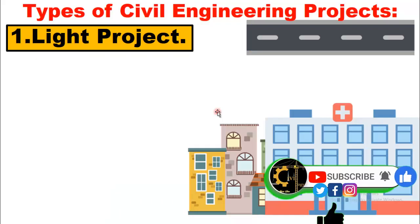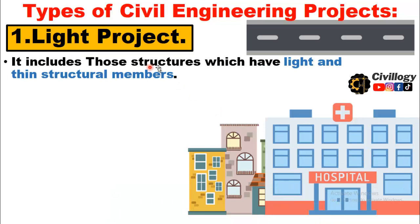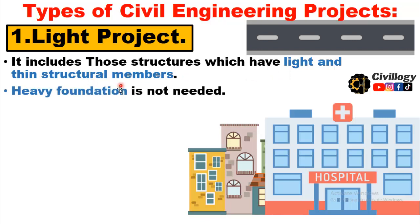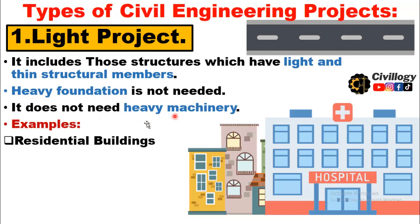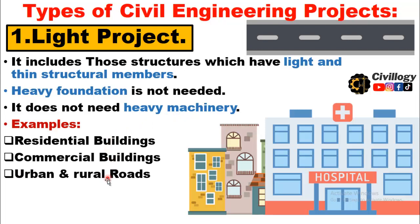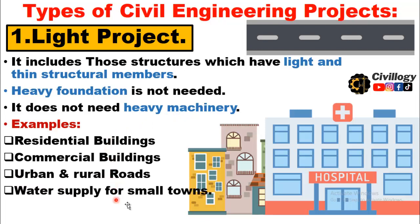First one is light project. It includes those structures which have light and thin structural members. Heavy foundation is not needed for light projects, and they do not need heavy machinery. Examples include residential buildings, commercial buildings, urban and rural roads, water supply for small towns, and sewerage systems.